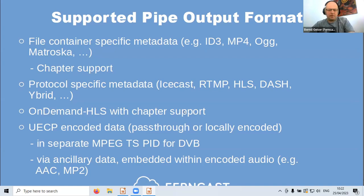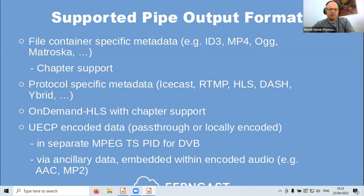On-demand HLS with chapter support — so for podcasting the chapter support is available. Another use case for metadata output is DVB MPEG-TS, where you can put UECP-encoded metadata. You can use pass-through mode: you have another UECP encoder, receive it, and directly pass it through to the MPEG-TS stream. Or we can locally encode it — you update our metadata object via another method such as the API, and we encode the UECP for you. We do not yet support the full standard but cover what customers have requested so far.